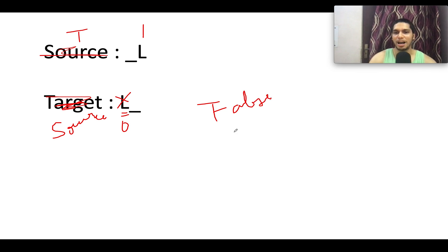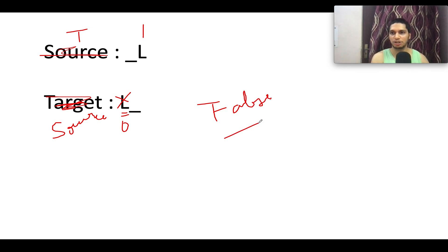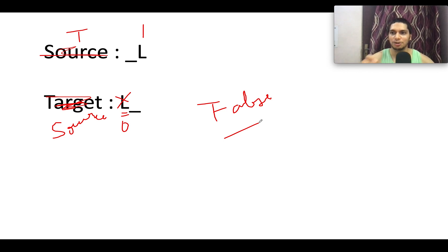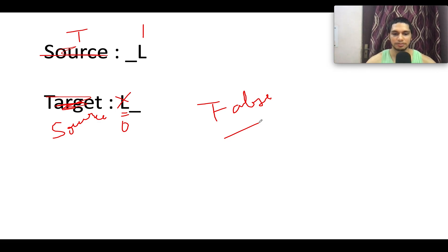Now we have analyzed all the possible cases. First, the character values must be equal. Second, the relative positioning must satisfy the direction constraint. Let's conclude by going through the coding section and club these test cases together to form the algorithm.